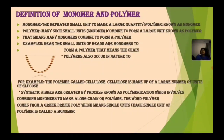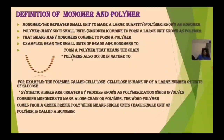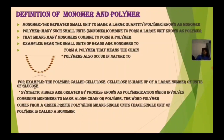Many bricks combine to form a building. You can see here these small beads present in a chain — the small beads are monomers and the chain is the polymer. The beads combine to form a chain, like that monomers combine to form a polymer. Polymers also occur in nature. For example, the polymer called cellulose — cellulose is made up of a large number of units of glucose, meaning large numbers of glucose units make up the polymer cellulose.